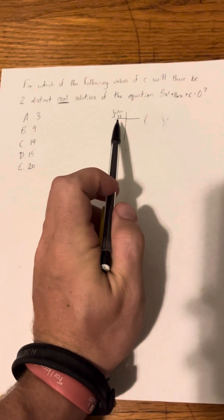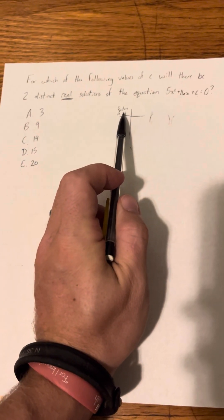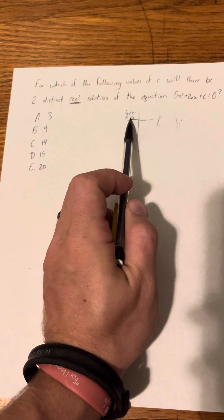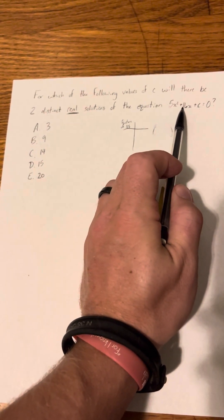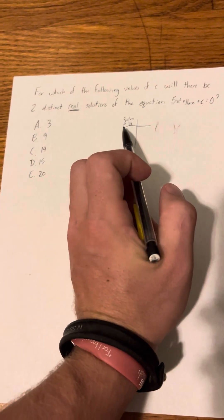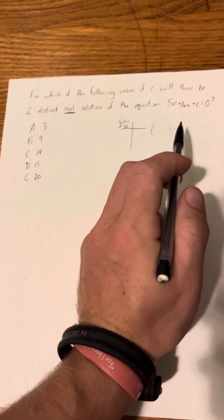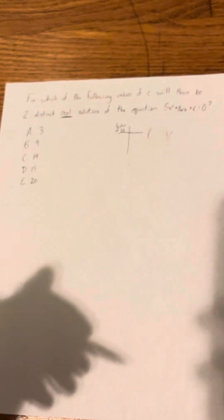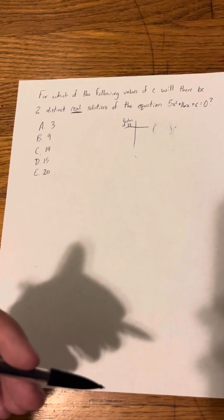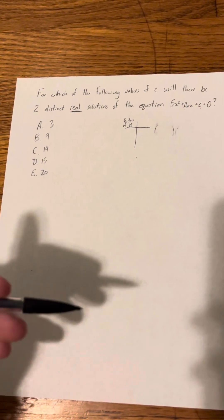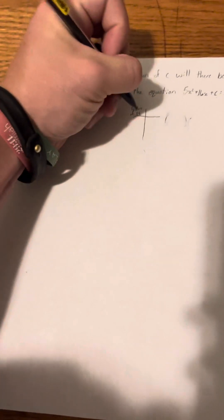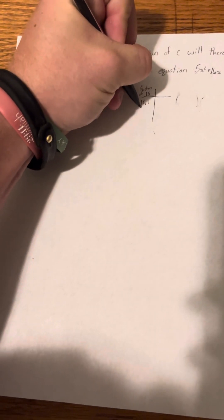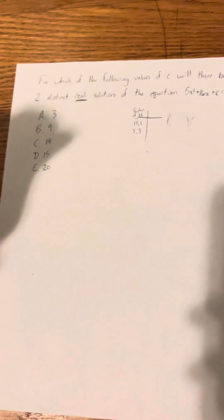So basically, you now need factors of 15, meaning numbers that multiply to be 15 and add to be 16. And if it works, that's your answer. And I can show you how that's your answer. But in this problem, you actually don't have to find the solutions. You just have to figure out which one gives you real solutions. But basically, factors of 15 would be 15 and 1, 5 and 3, and that's it.